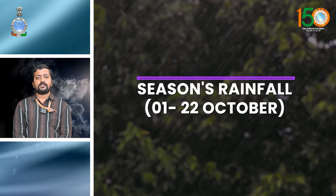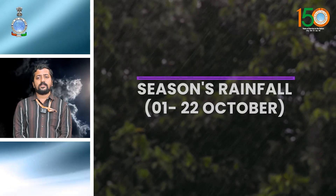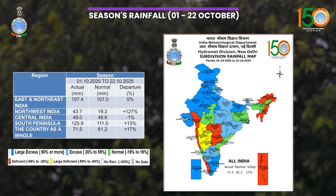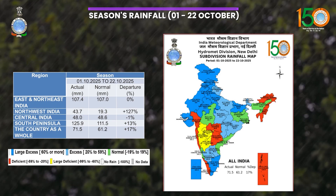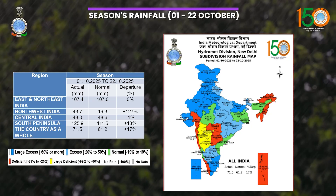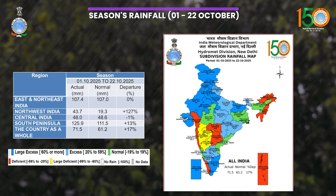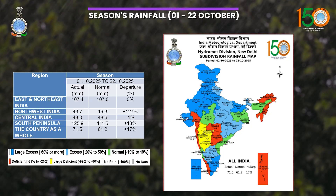With respect to the seasonal rainfall, Northwest India and South Peninsular India received excess and large excess rainfall, and the country as a whole received 17% more rainfall than the climatological average.